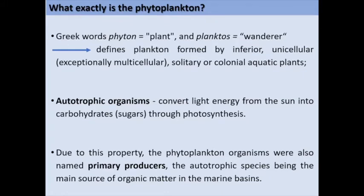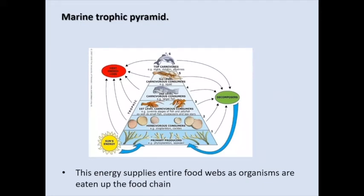What exactly is the phytoplankton? The term phytoplankton comes from two Greek words: phyton, which means plant, and plankton, which means wanderer. It defines plankton formed by inferior, unicellular, solitary or colonial aquatic plants. They are autotrophic organisms which convert light energy from the sun into carbohydrates through photosynthesis. Due to this property, phytoplankton organisms are named primary producers, the autotrophic species being the main source of organic matter in the marine base. Phytoplankton is the first link of the trophic chain, practically the basic food for all consumers found at higher trophic levels such as zooplankton and fish.